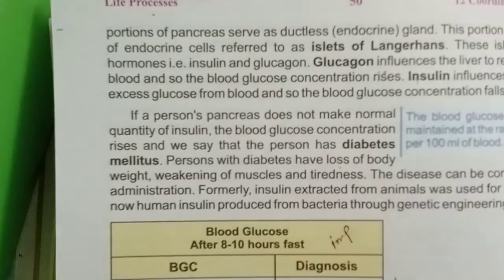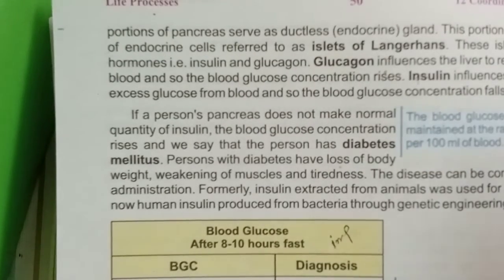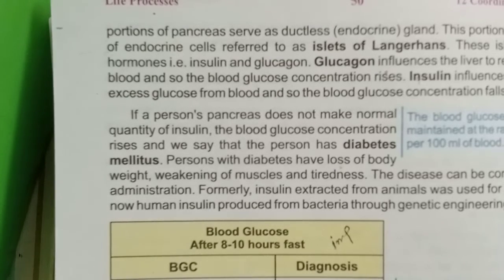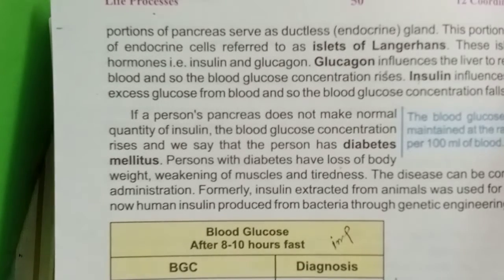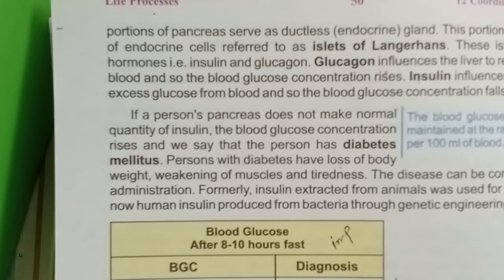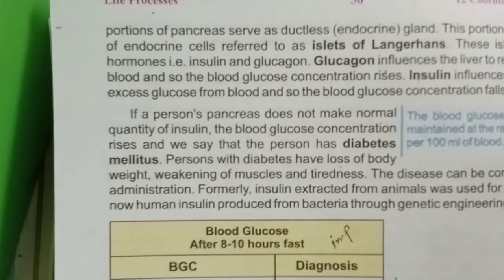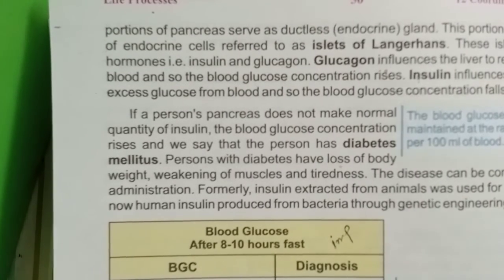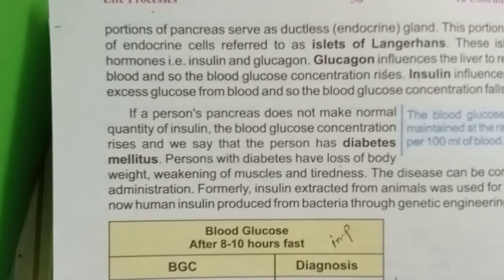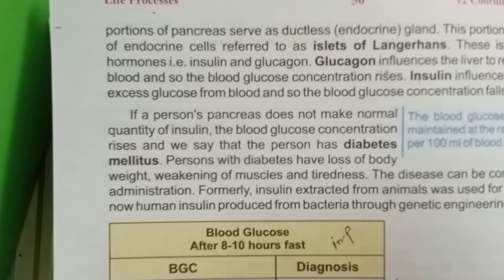Previously, insulin used in treatment was sourced from animals, but now insulin is produced using bacteria through a process of genetic engineering. In this process, the desired genes responsible for producing insulin are identified and introduced into bacteria, which then multiply and produce insulin. In this way, insulin is now manufactured for treatment.